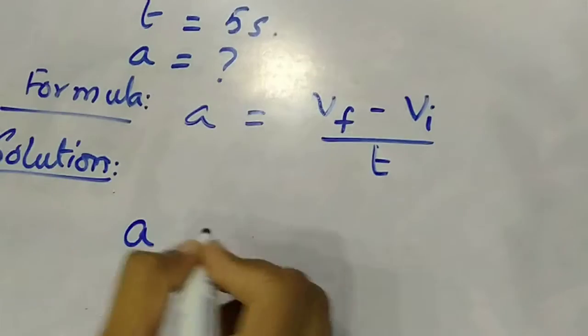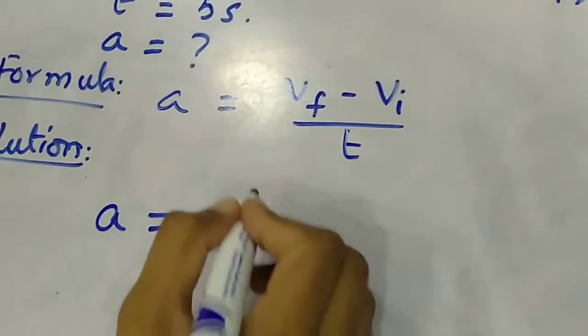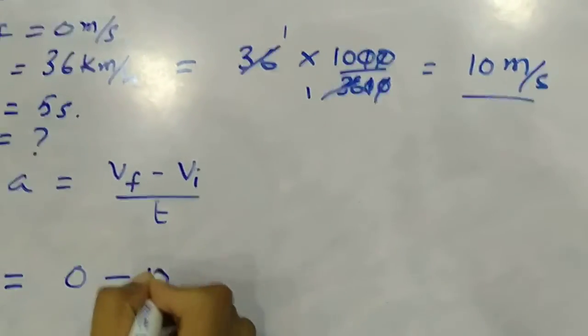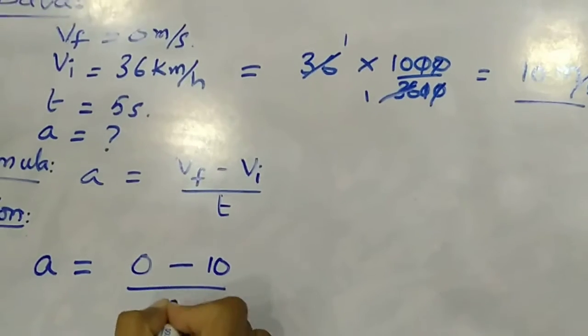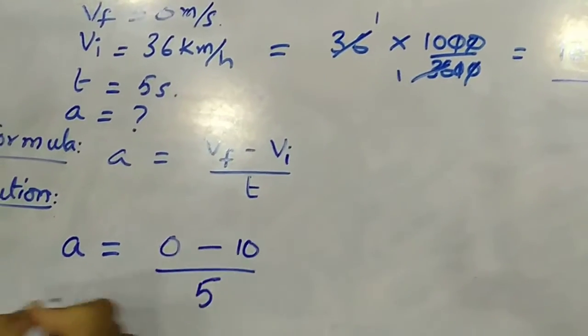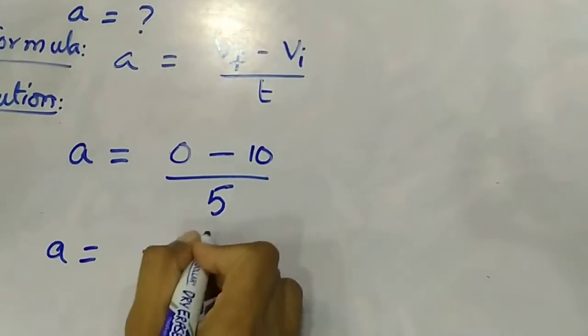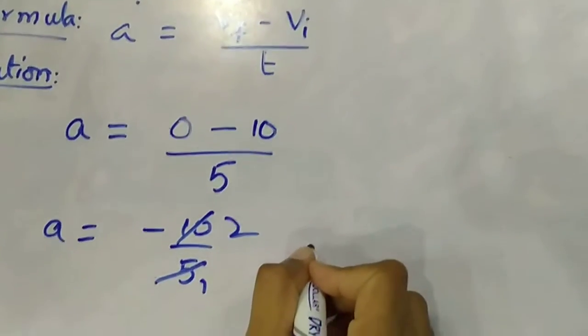Look at this solution. Acceleration a: Vf is 0, minus Vi is 10 meters per second, time is 5 seconds. So a equals 0 minus 10 upon 5, which equals minus 10 upon 5, equals minus 2.